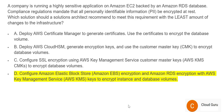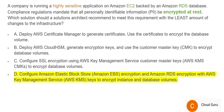Let's look at question 69. Please pause the video and mark your keywords. The story involves a highly sensitive application — whenever you see highly sensitive, encryption must be done. Encryption can happen at two places: encryption in motion, when data moves between systems, and encryption at rest, when data resides in a database or store. This question is only asking about encryption at rest, not in motion.